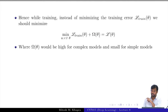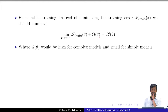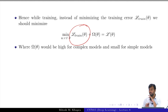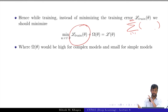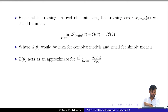Omega theta would be high for complex models and low for simple models. For the rest of this lecture and course, we assume we know how to deal with the train loss L_train(theta), whether it is squared error loss, log likelihood, or similar. We will focus on the other term which brings in the regularization. What omega theta does is act as an approximation for that complexity term.